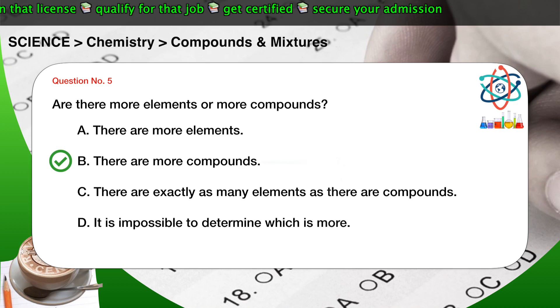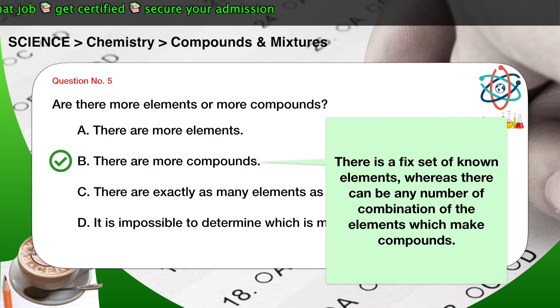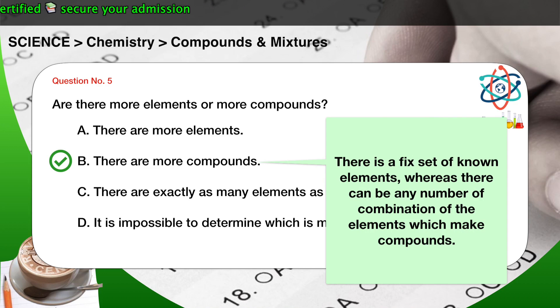The correct answer is B. There is a fixed set of known elements, whereas there can be any number of combinations of the elements which make compounds.